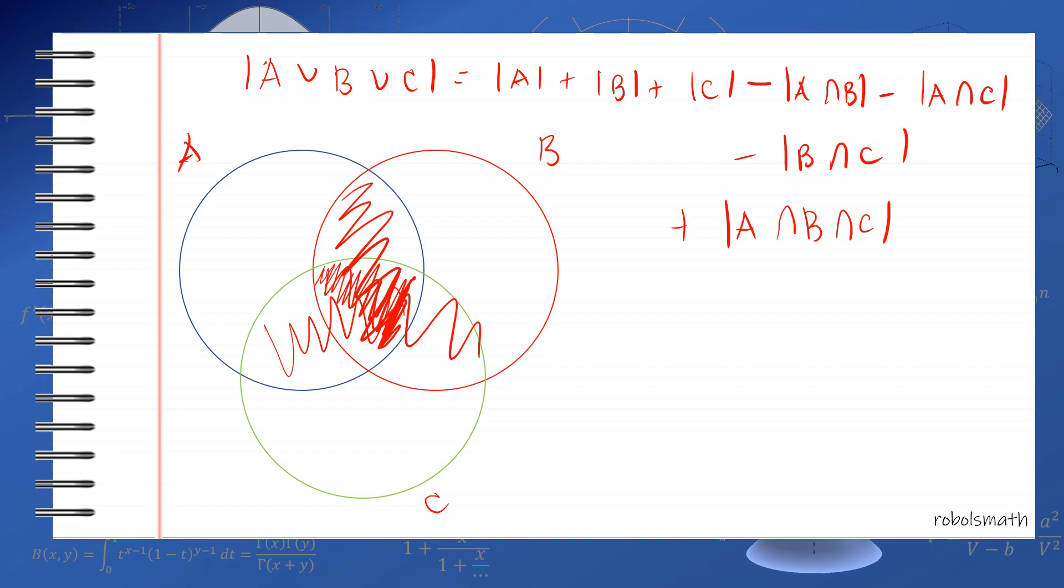So the technique here is, to find the cardinality of the union of the three, you just add the cardinality of the individuals, minus subtract all the pairwise intersections, so that's A∩B, A∩C, B∩C, and then add back the triple intersection.